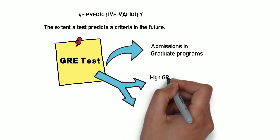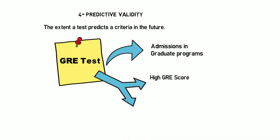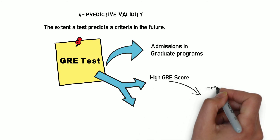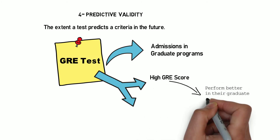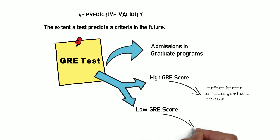If students scoring high on the GRE perform better in their graduate programs than students who score low, it means the GRE test has high predictive validity. So predictive validity refers to the extent a test predicts a criterion in the future. This was all about validity, and I'll keep talking about other research constructs in my future videos.